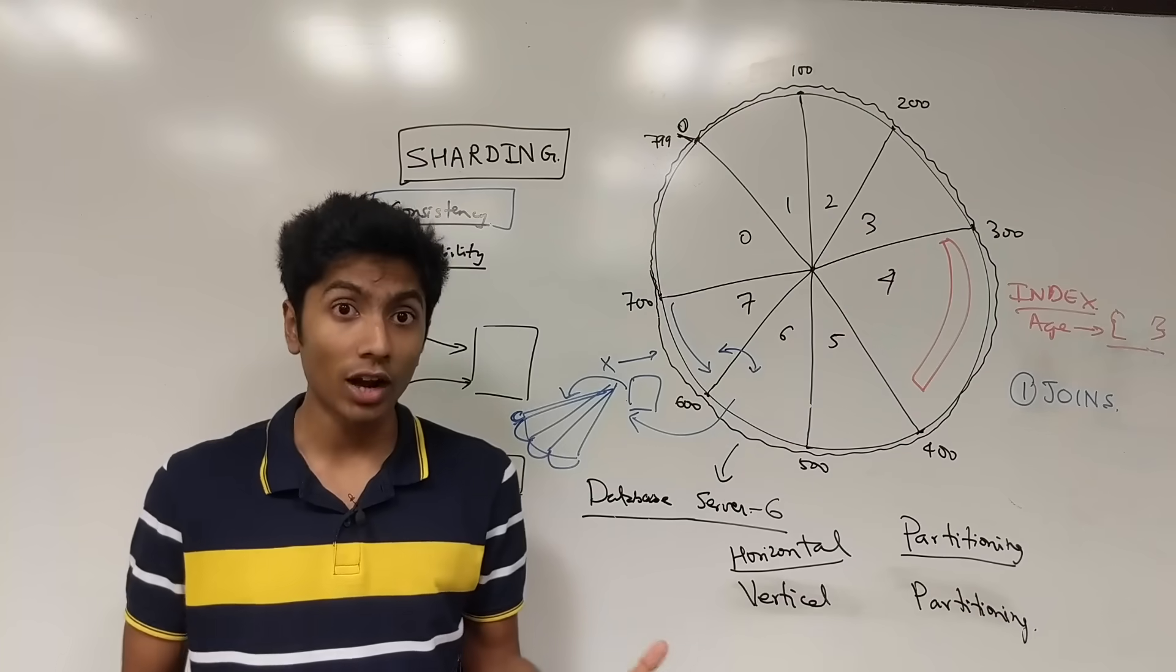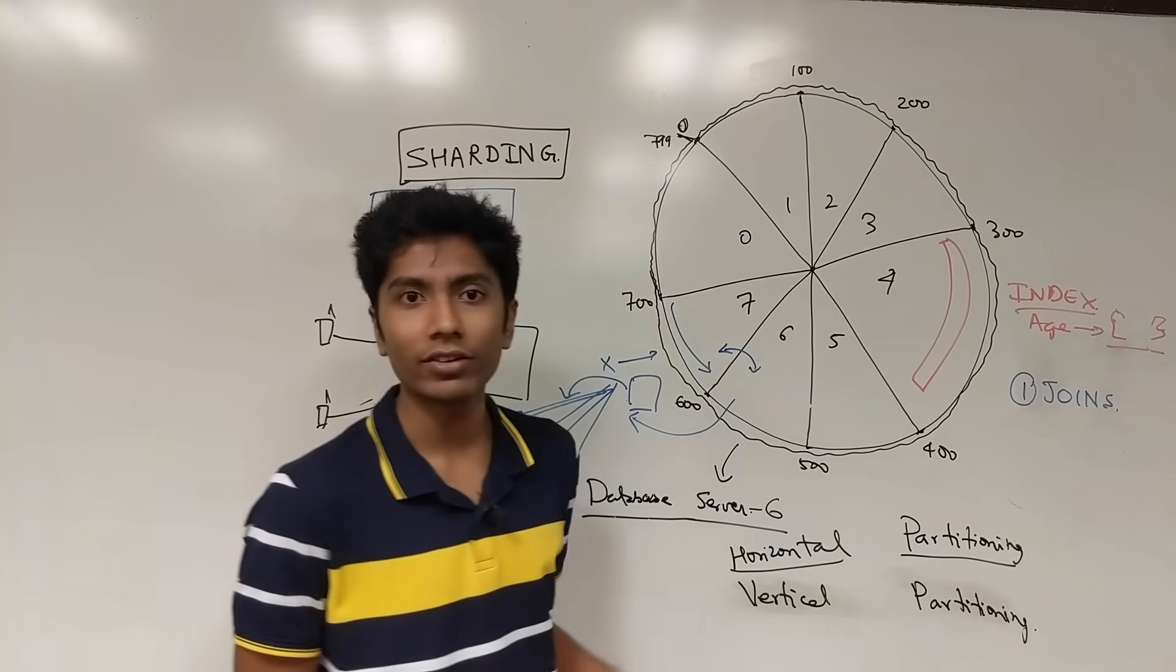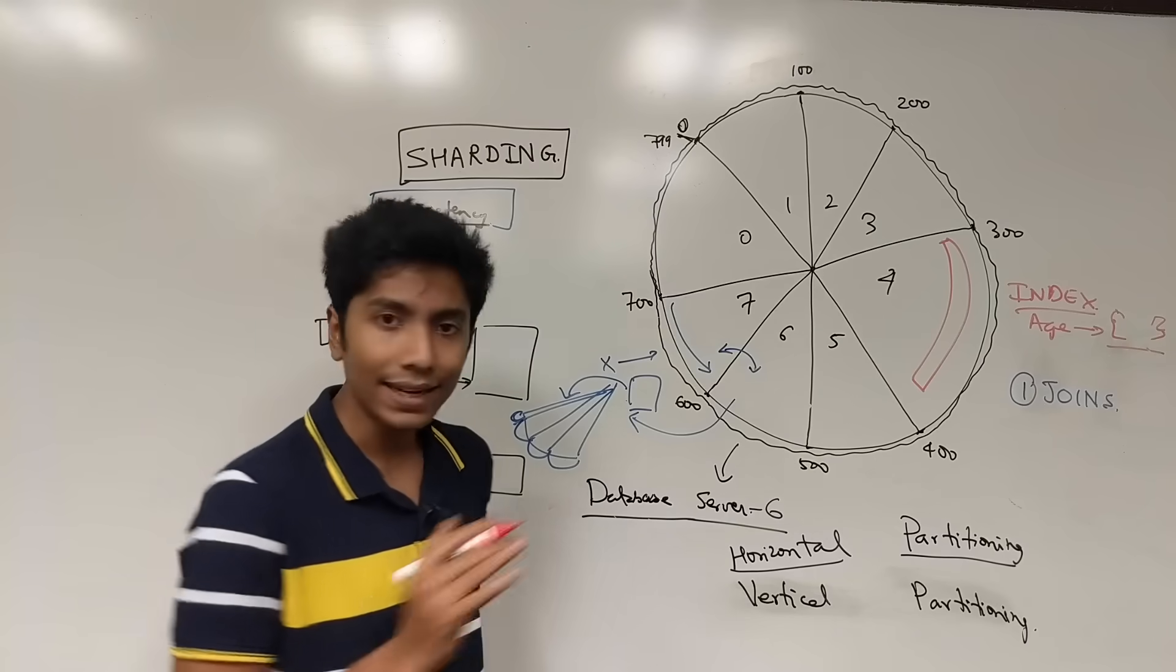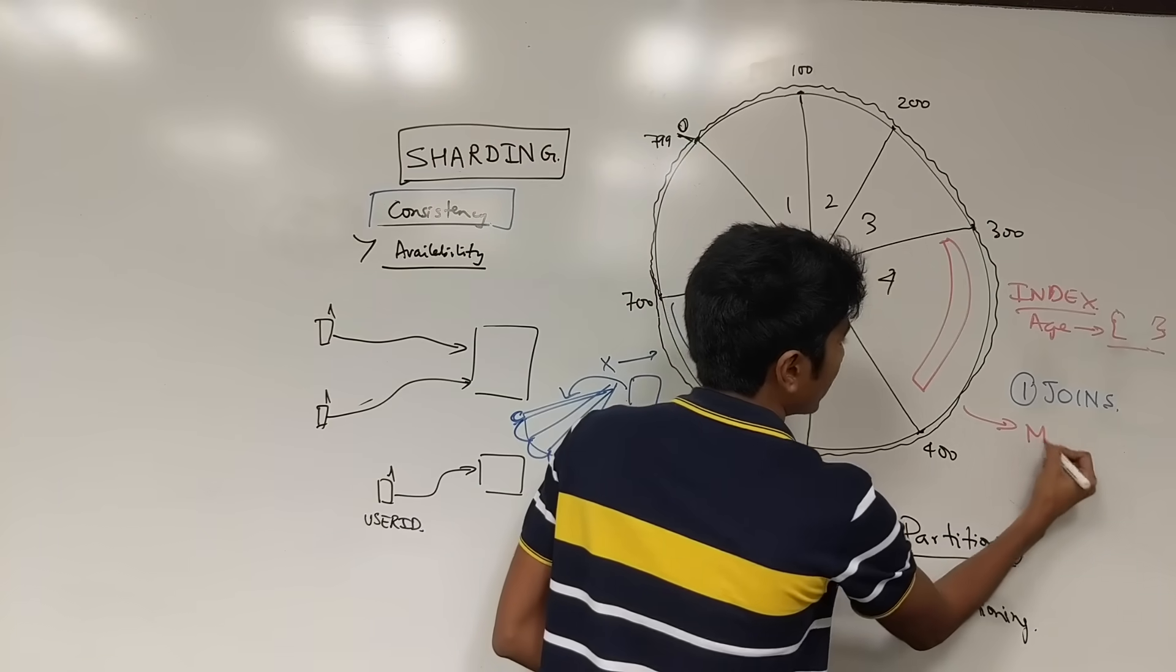But what happens if a shard fails? Let's say there's some sort of electricity issue over there. In that case, you could have something like a master-slave architecture.